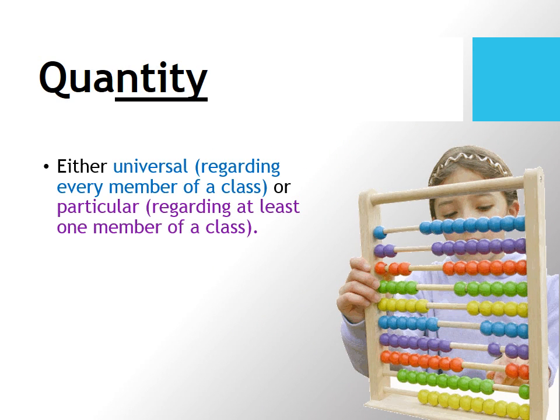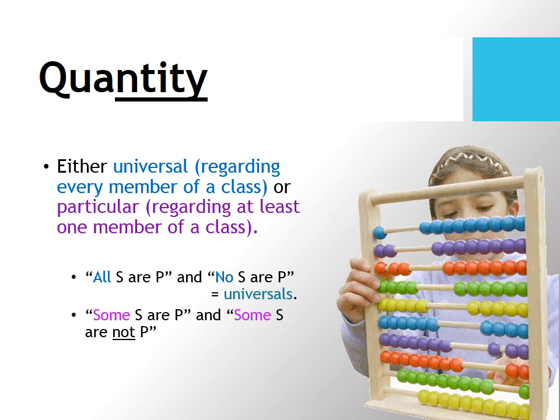Quantity, on the other hand, either asserts universal regarding every member of a class, or it's particular, it regards at least one member of a class. So all S are P and no S are P are your universals, because they either universally assert or universally deny membership in a class. By way of contrast, some S are P and some S are not P, those are particular. Obviously that word sum gives it away.